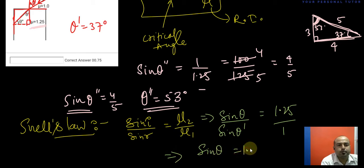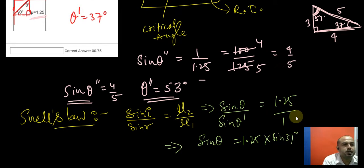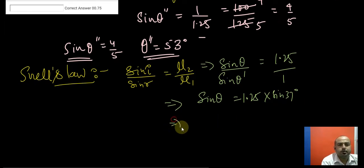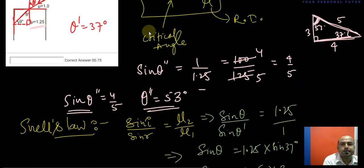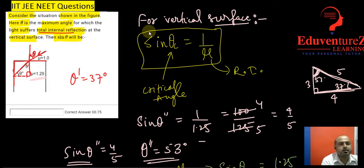Sine theta equals to 1.25 into sine 37 and sine 37 is 3 upon 5. So sine theta equals to 1.25 into 3 upon 5, so it will give you 0.75. So the value of sine theta is 0.75 and this is our final answer. I hope that this has cleared it out. Thank you.